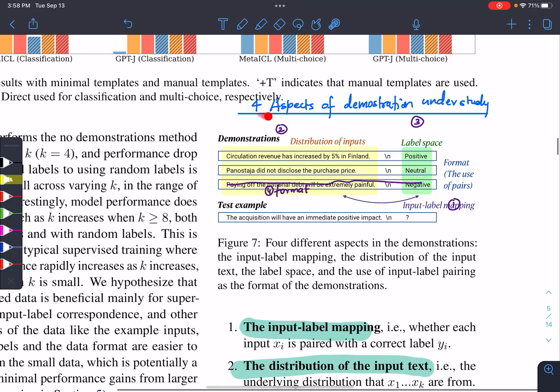Four aspects of demonstration which are under study: one is input label mapping. The thing in the yellow is input, the thing in the green is the label. The first one refers to the mapping between the input and the output. What they found was, if you reshuffle these labels, keeping the input same, so they are not the true label, but they belong to this label space and they are assigned randomly.